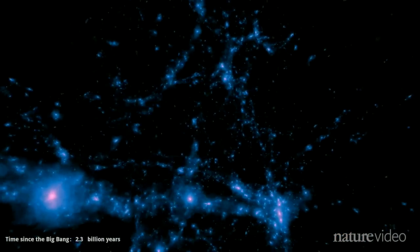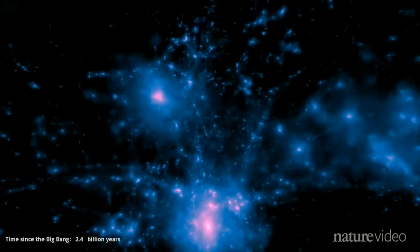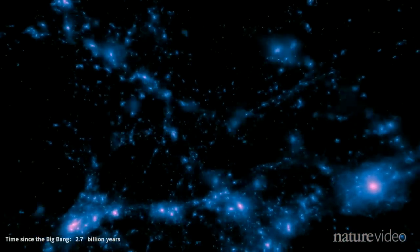Where dark matter is densest, shown as bright pink spots, ordinary matter also clumps and forms into galaxies.